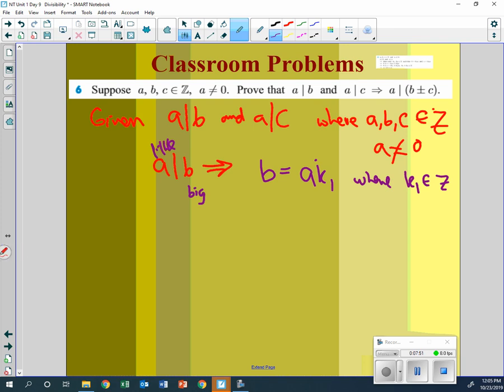And then, for the other, we have a divides c. That's going to be c is the big one, a times k2, where k2 is the element of Z, the integers. So now, what are we going to do?